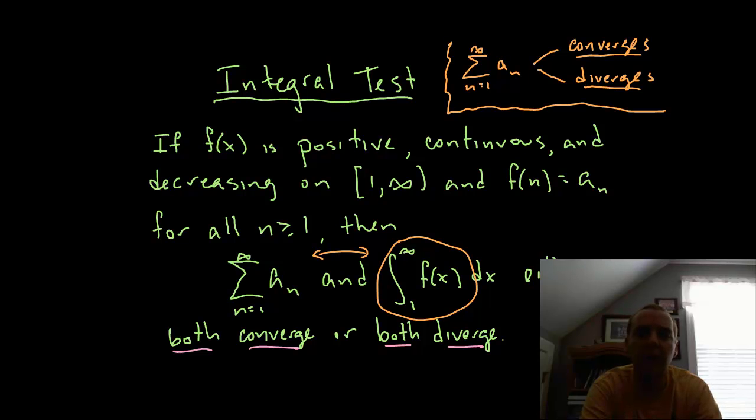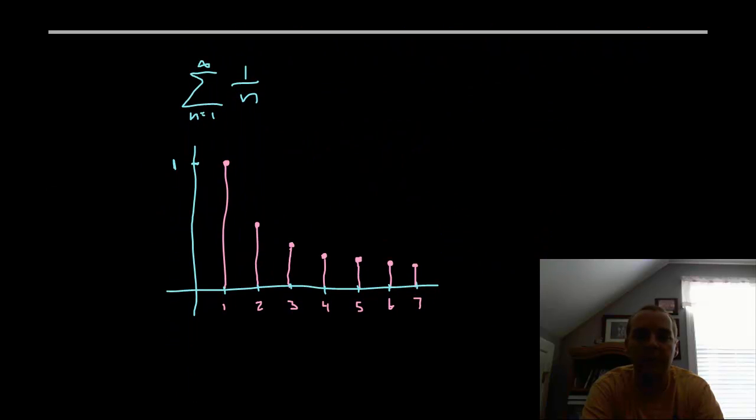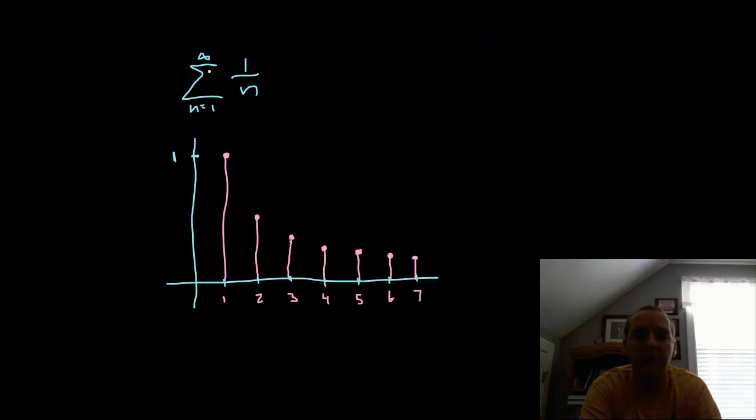So let me give you just a quick idea of why it works and then we'll do a couple of examples. Alright, so I've got an example here of just a simple infinite series sum from one to infinity of one over n. I've done this graphically here.